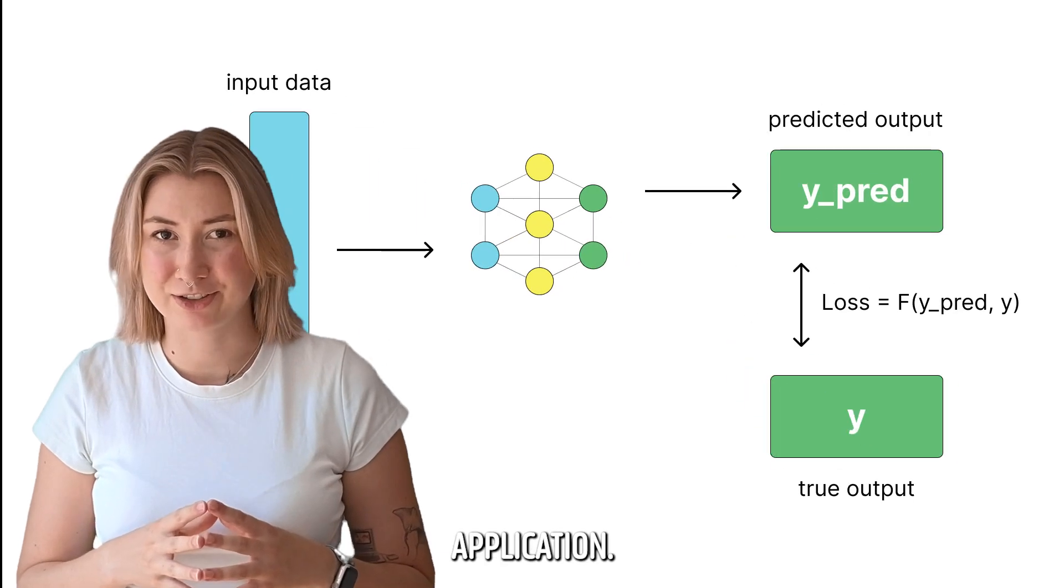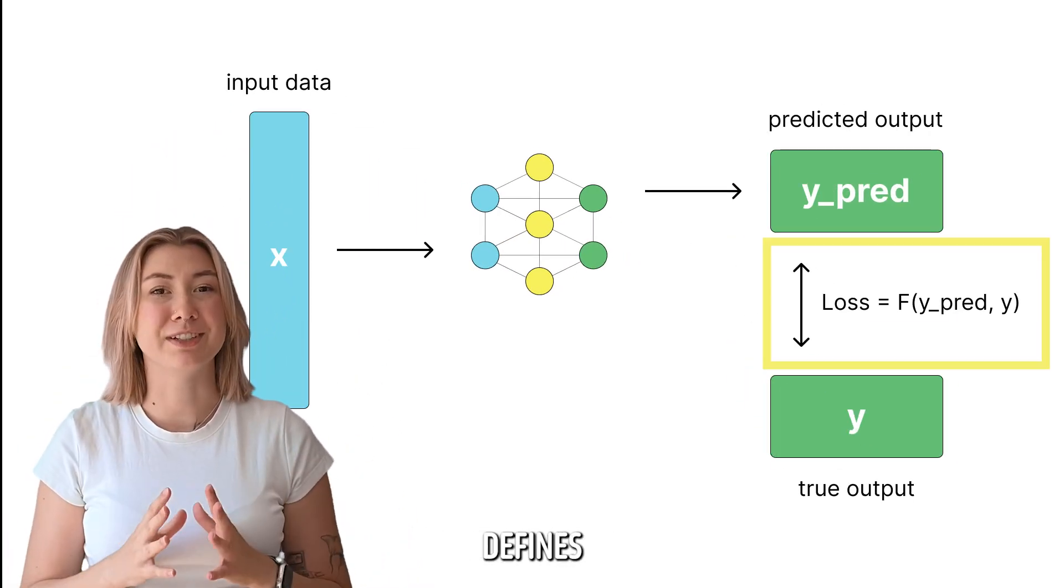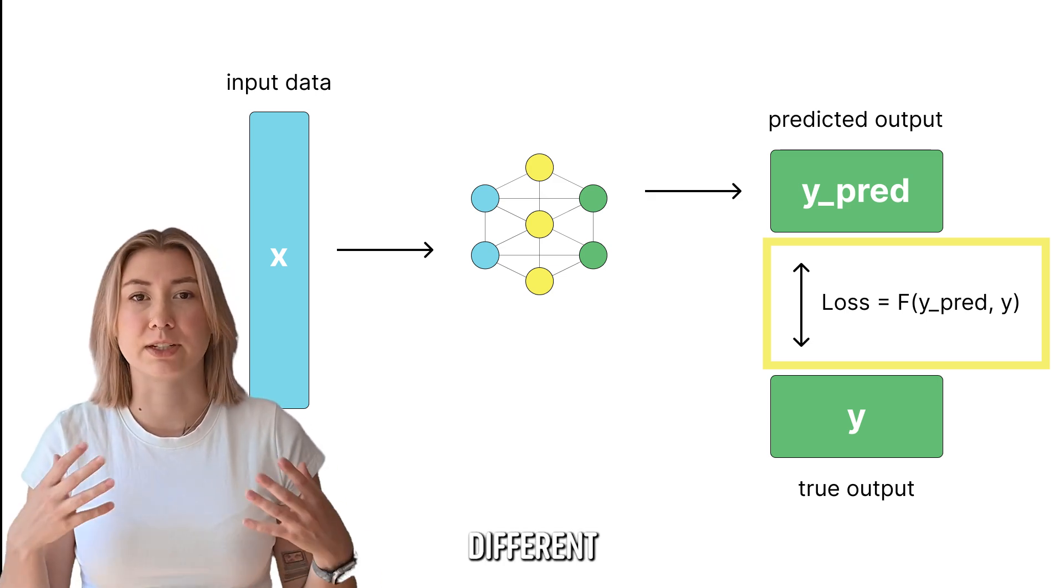In any sort of machine learning application, the secret to how models learn is within the loss function. The loss function defines the objective that the model is trying to optimize, and there are different types for different applications.